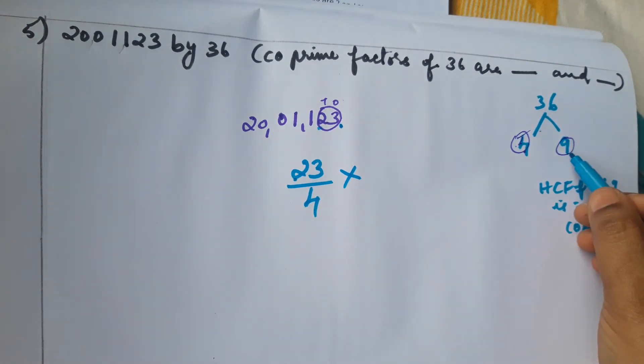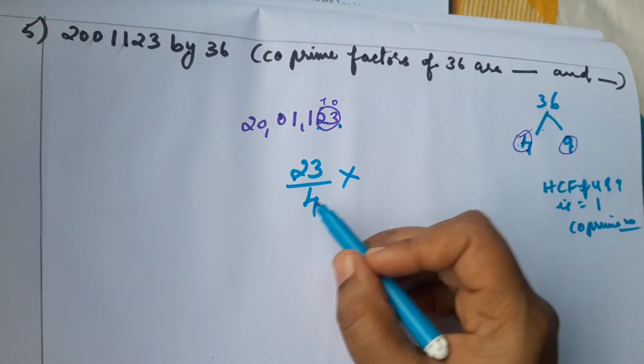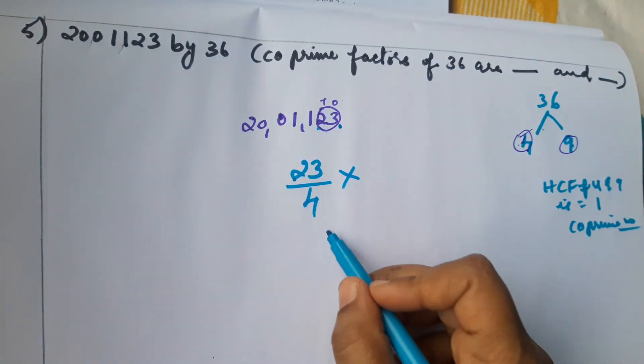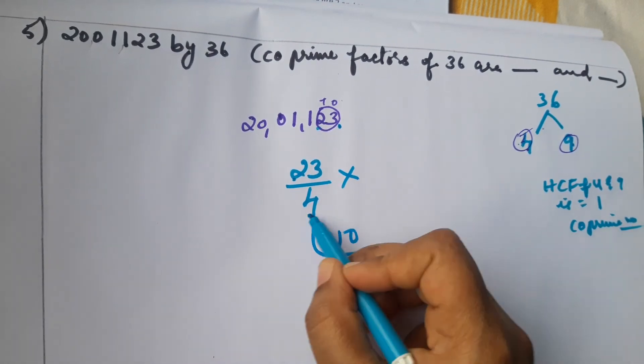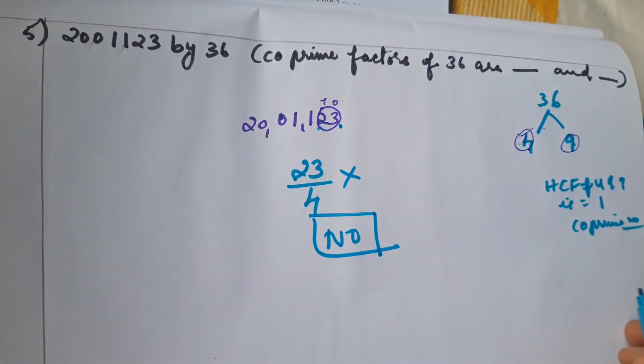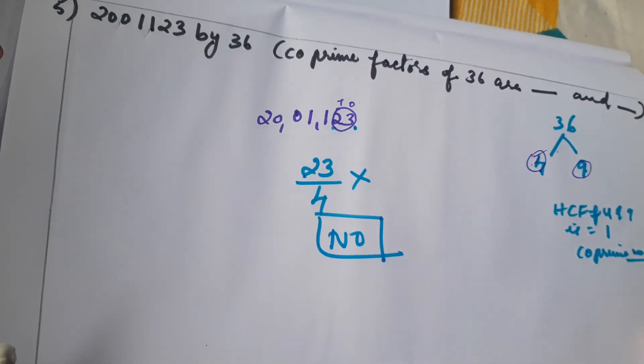Since 23 is not divisible by 4, it is not necessary to check with 9. If one co-prime factor does not divide the number, we can stop and conclude the answer is No. Therefore 20,11,123 is not perfectly divisible by 36. Answer: No.